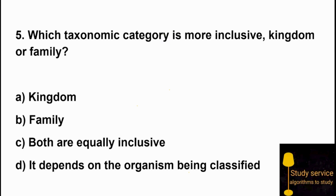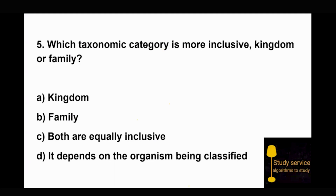Question 5: Which taxonomic category is more inclusive — Kingdom or Family? Kingdom is more inclusive than Family, as Kingdom is a broader category that contains many more organisms than Family.